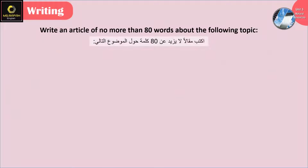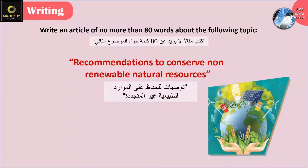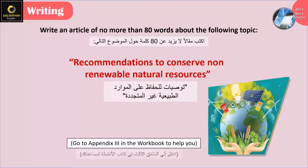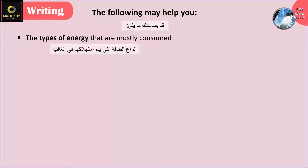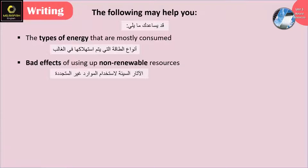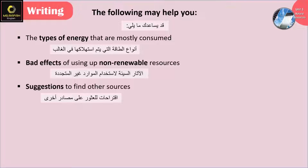Write an article of no more than 80 words about the following topic: Recommendations to conserve non-renewable natural resources. The following may help you: the types of energy that are mostly consumed, bad effects of using up non-renewable resources, and suggestions to find other sources.